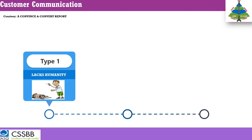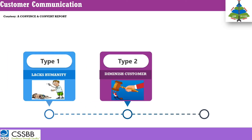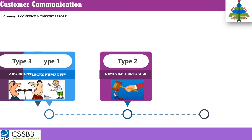The second category is words that diminish the customer. For example: 'I guess you are upset,' 'I guess you are not happy,' 'I guess you had a bad experience.' When you say 'I guess' or 'it seems,' you are not sharing the customer's feeling or emotion — you are being dismissive. That's the second category. The third category is argumentative words — 'you have misunderstood,' 'you made a mistake,' 'you didn't understand,' 'you didn't provide this document.' These words are argumentative by nature.